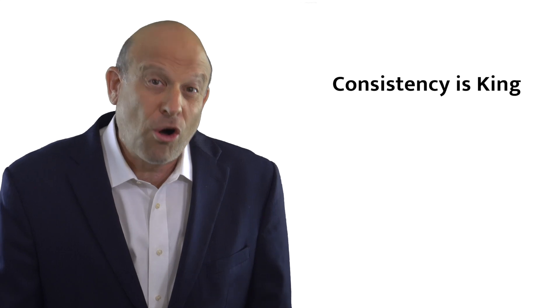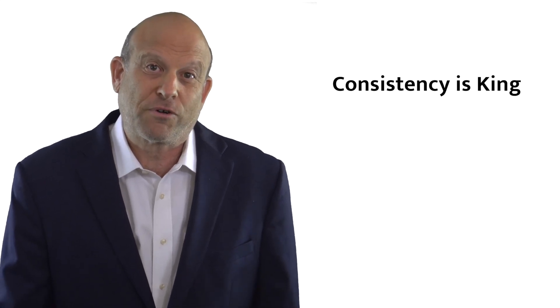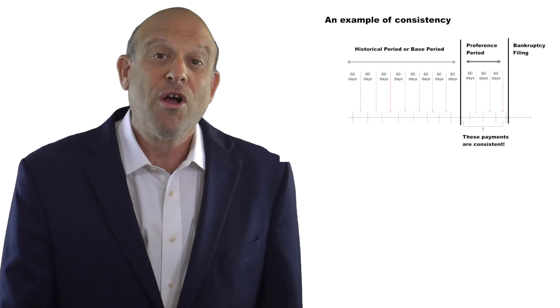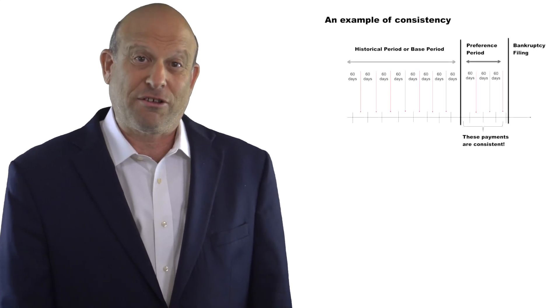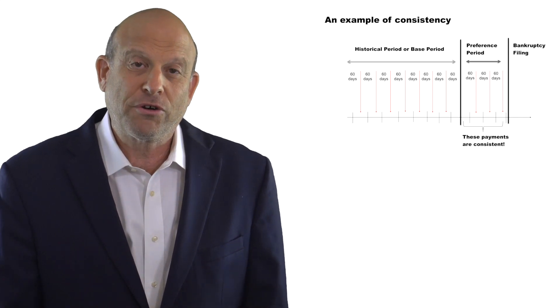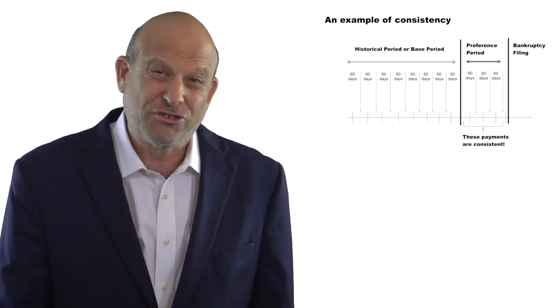It's all about consistency. If a company always paid you in 60 days late for three years prior to the bankruptcy and right before the bankruptcy paid you also exactly 60 days late, you probably have a pretty good ordinary course defense. It's about consistency.